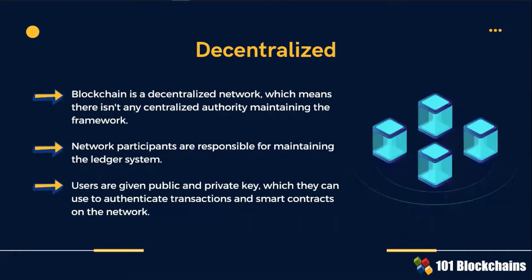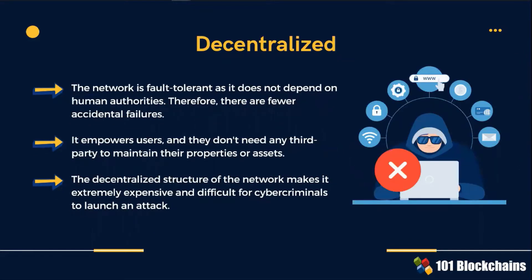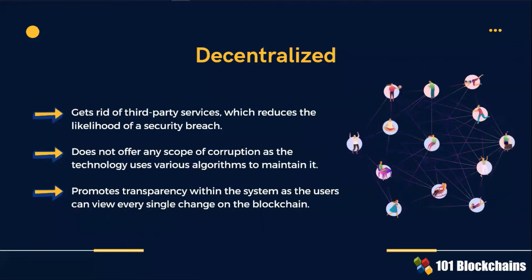Moving ahead with blockchain features, blockchain is a decentralized network, which means there is no central authority that controls operations. With public and private keys, users authenticate the transactions, and that's enough for the system to operate. The blockchain network is fault tolerant, as it does not depend on human authorities. Most importantly, the decentralized structure of the network makes it extremely expensive and difficult for cyber criminals to launch an attack. Decentralization also reduces the possibilities for corruption, as it promotes transparency within the system.